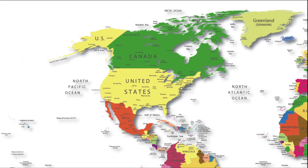Geographical Features: North America is bordered by the Arctic Ocean to the north, the Atlantic Ocean to the east, the Pacific Ocean to the west, and the Caribbean Sea to the southeast.